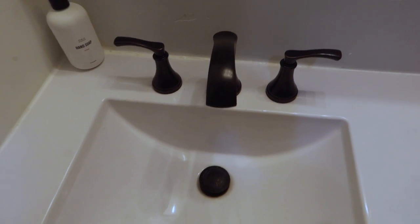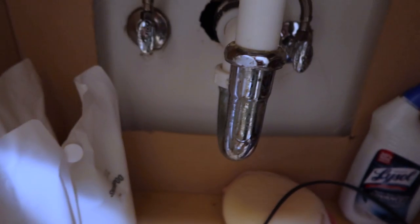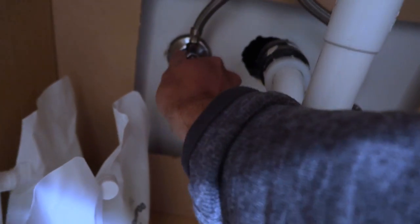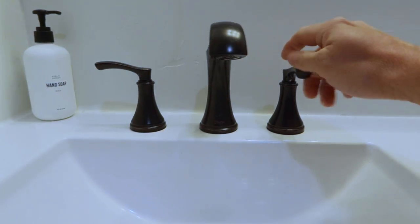So step one is to remove the old faucet. The first thing I'm going to do is turn off the water to the fixture at the valves under the sink and open up the faucet to drain as much water as possible.